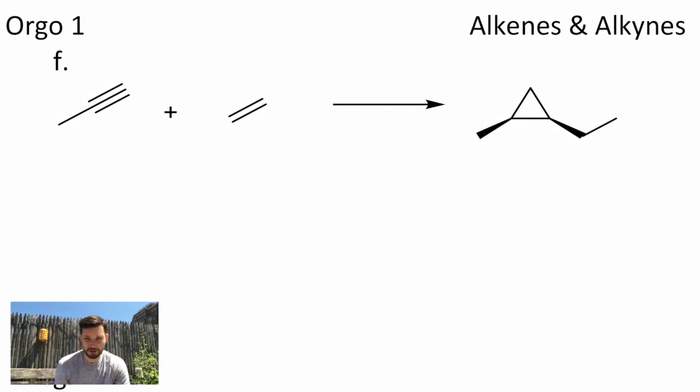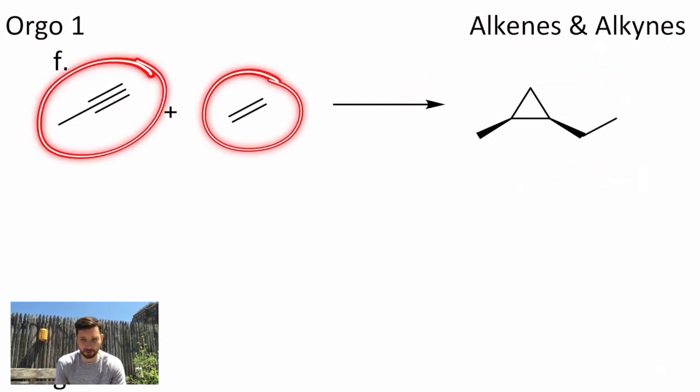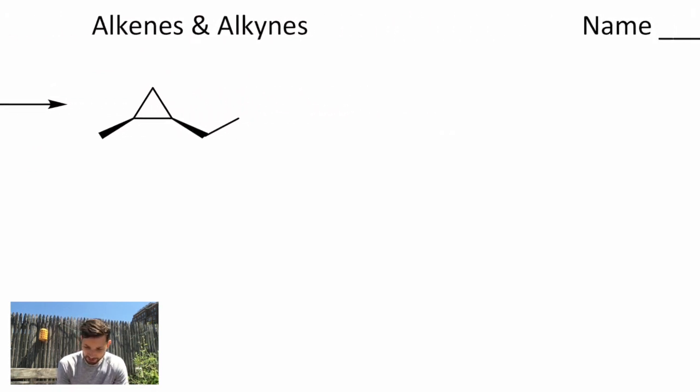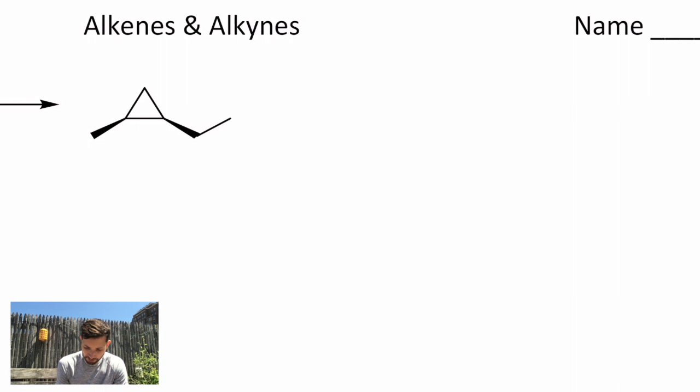We're using retrosynthesis as a tool to think backwards when we look at a molecule. If I want to make this particular cyclopropane from this alkyne and alkene pair of building blocks, I first think backwards. How can I make a cyclopropane? We do that by drawing these double arrows to mean going backwards one step at a time, usually not bothering with the reagents knowing we can fill those in when we write it out forward.